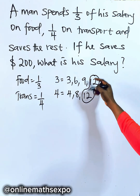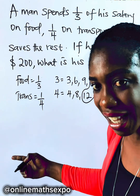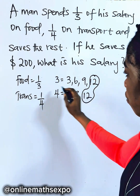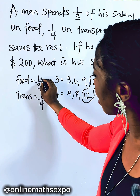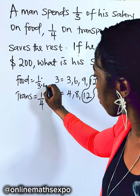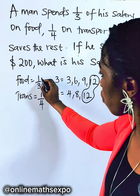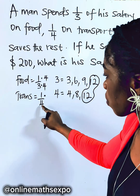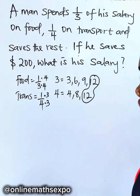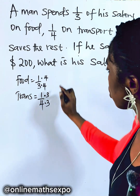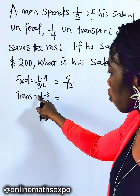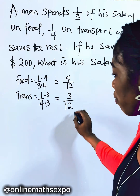That means this man shared his money into 12 parts. For food, we convert one third to twelfths by multiplying three by four to get 12, and doing the same to the numerator: one times four gives us four. So food is 4 out of 12. For transport, one times three is three, giving us 3 out of 12.